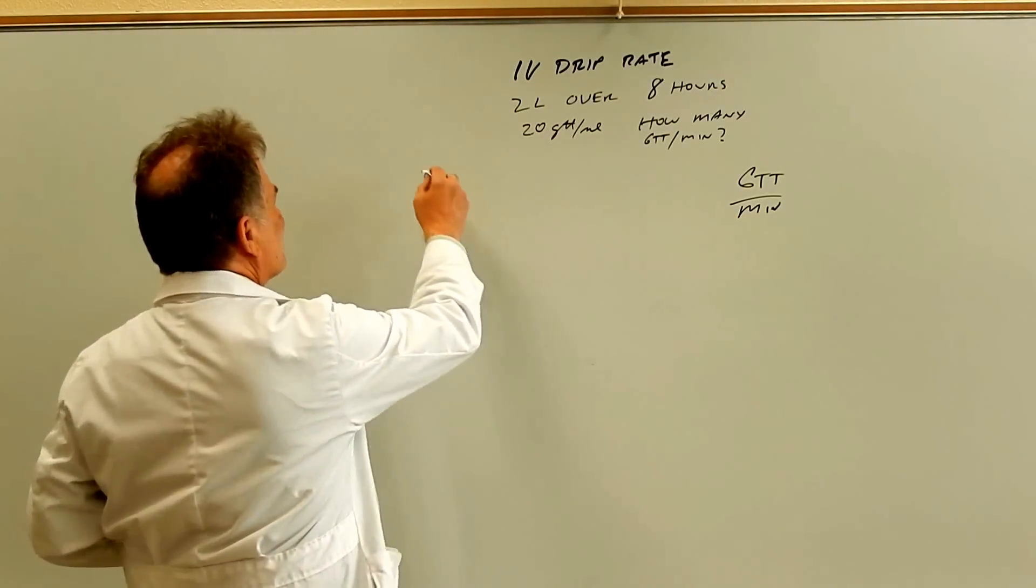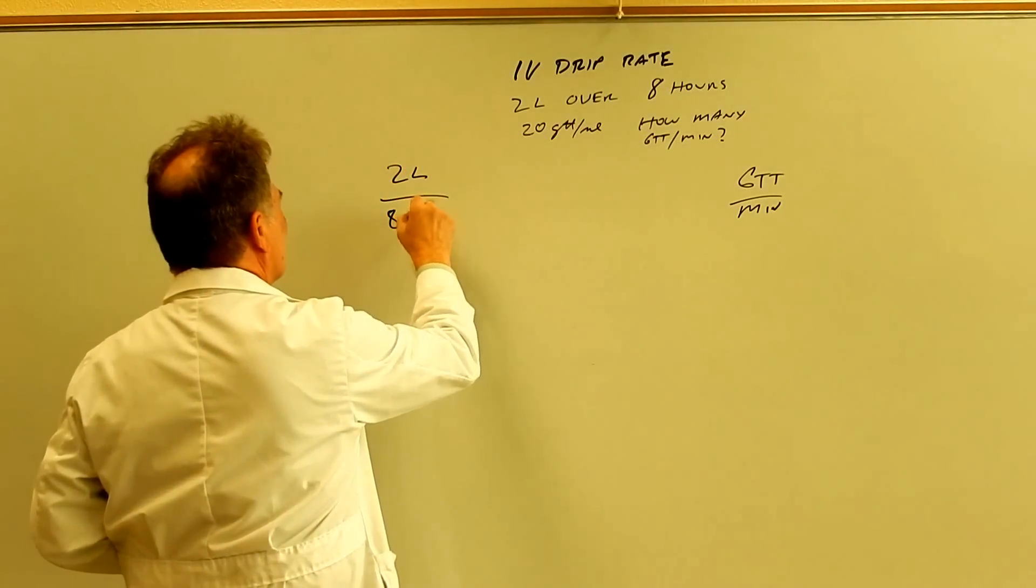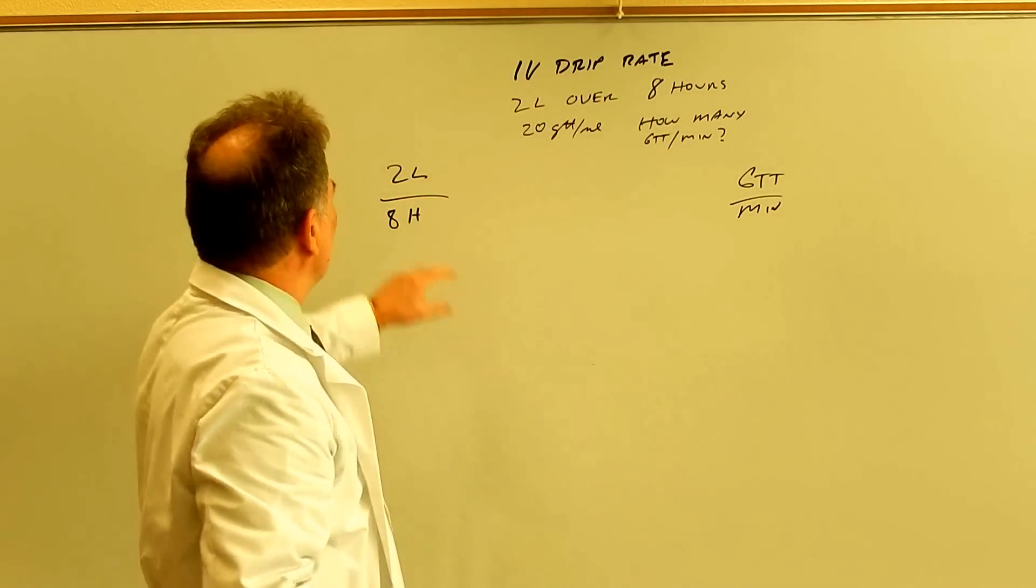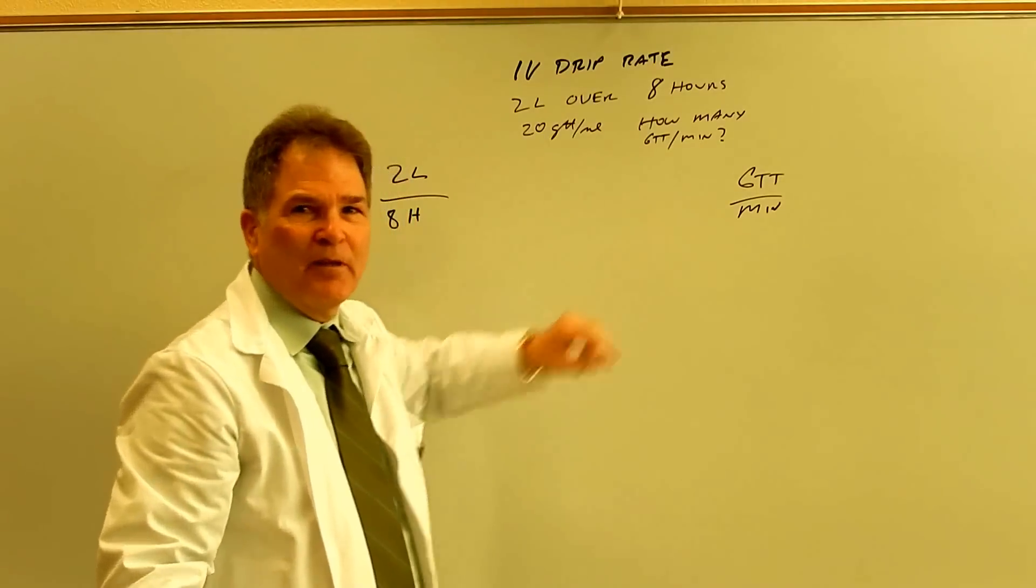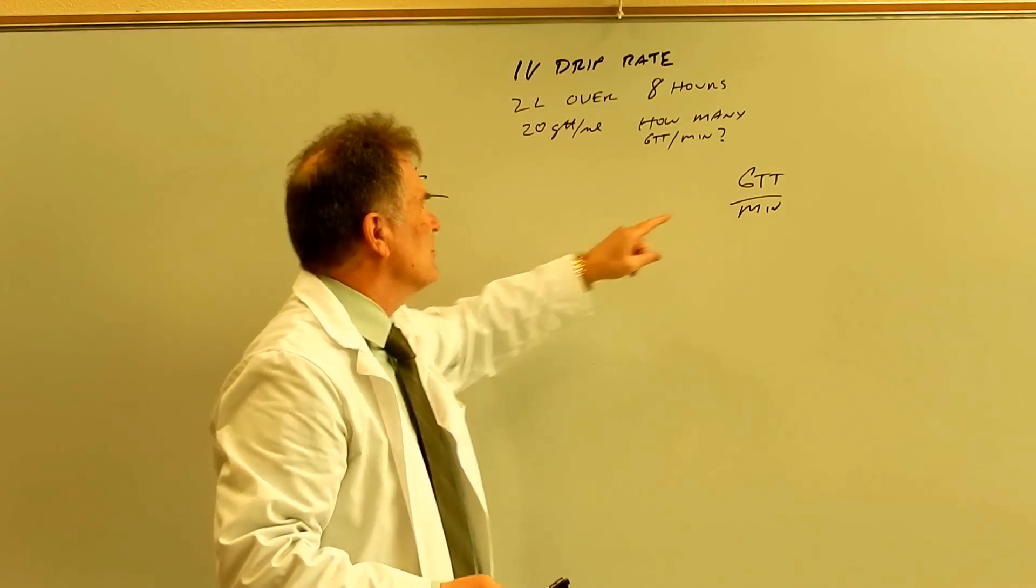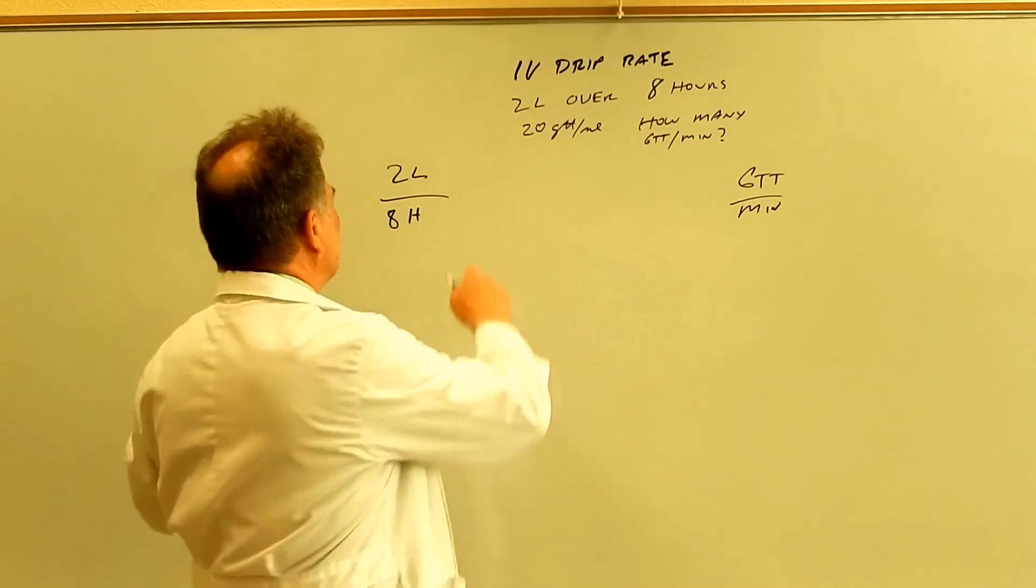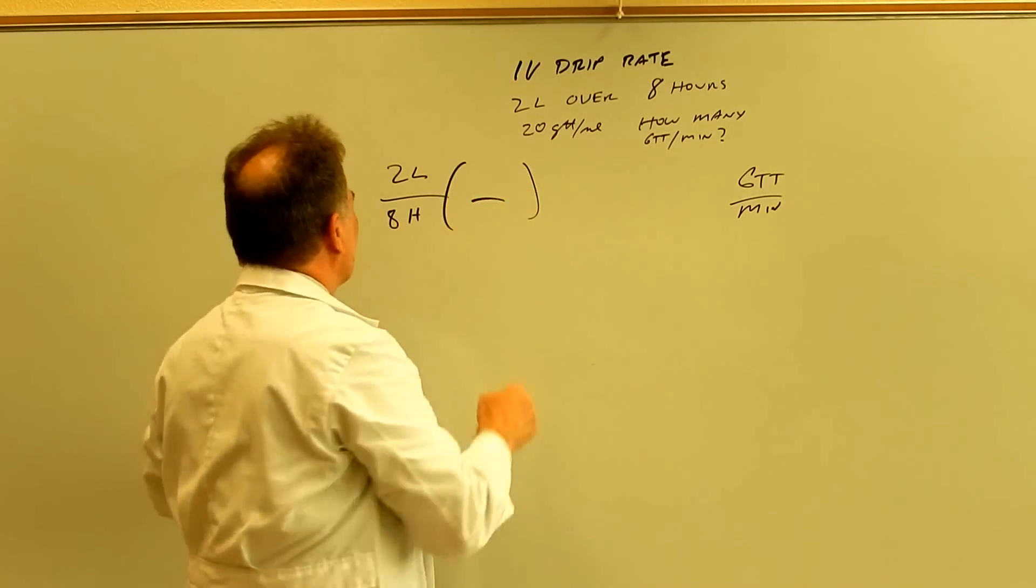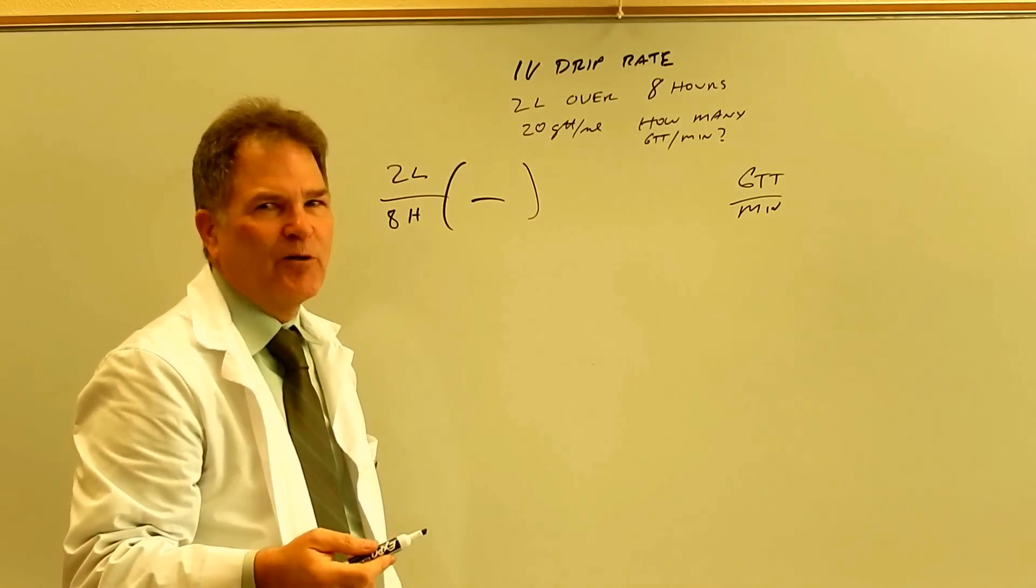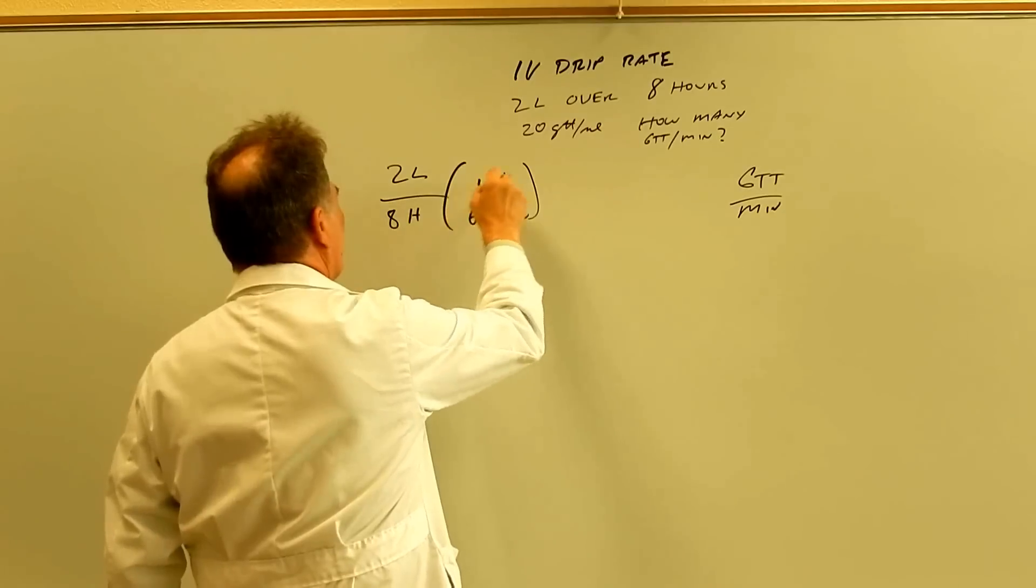So the speed we're starting with is 2 liters per 8 hours. So we have to go from here to there. So what do we have to do? We have to change liters into drops and hours into minutes. So let's do the easy one first. There's 60 minutes per hour, of course. So we need one hour on top, 60 minutes on the bottom.